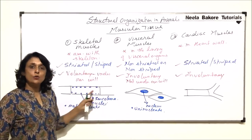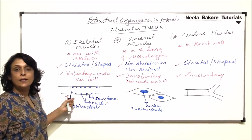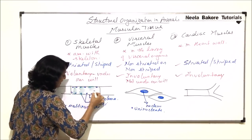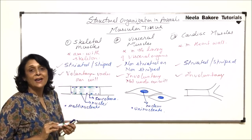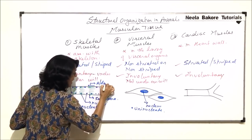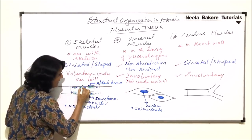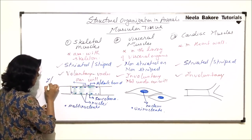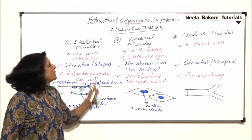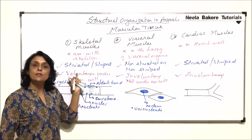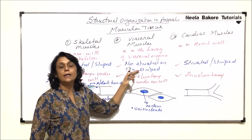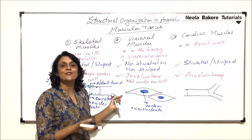In skeletal muscle fibers, we find alternating light and dark bands. These bands give the appearance of striations. The dark band is known as the A band, and between the dark bands is the I band, or light band. Because of these bands, striations are visible, giving the name striped or striated muscles. In smooth muscles, we do not see those striations, so we call them non-striated or unstriated muscles.